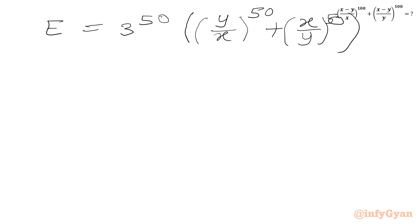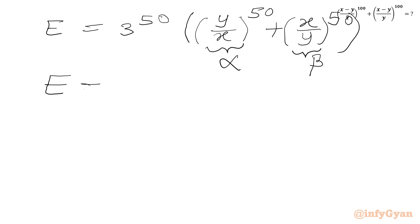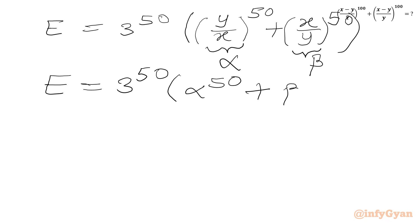Now we will consider y over x equal to alpha and x over y equal to beta. So our required expression in terms of alpha and beta will be 3 to the power 50 times, in bracket, alpha to the power 50 plus beta to the power 50. Now we have to calculate alpha and beta first.